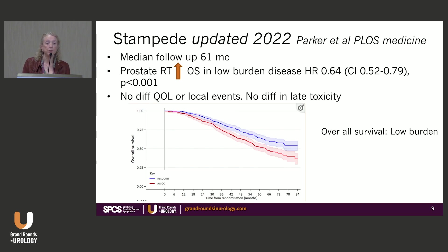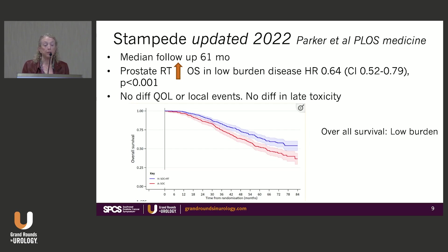The trial was updated in 2022 by Parker with a median follow-up of five years. Radiation to the prostate improves overall survival in low burden disease, with a hazard ratio of 0.64, and there is no price to pay — no difference in quality of life or local events with local radiotherapy.